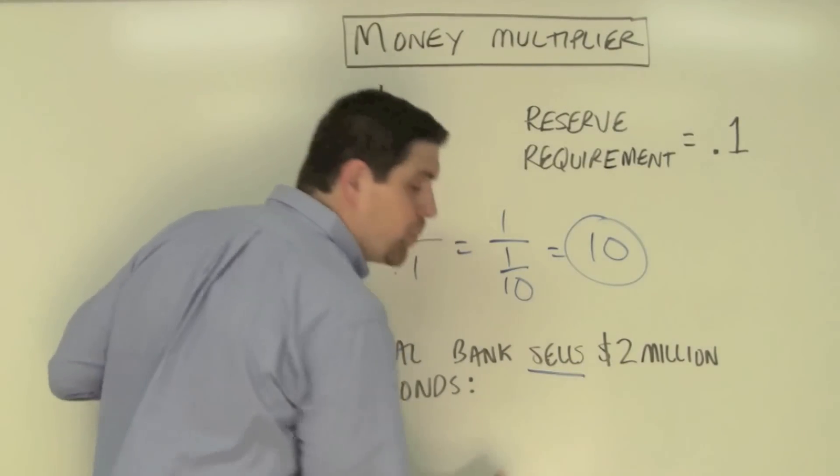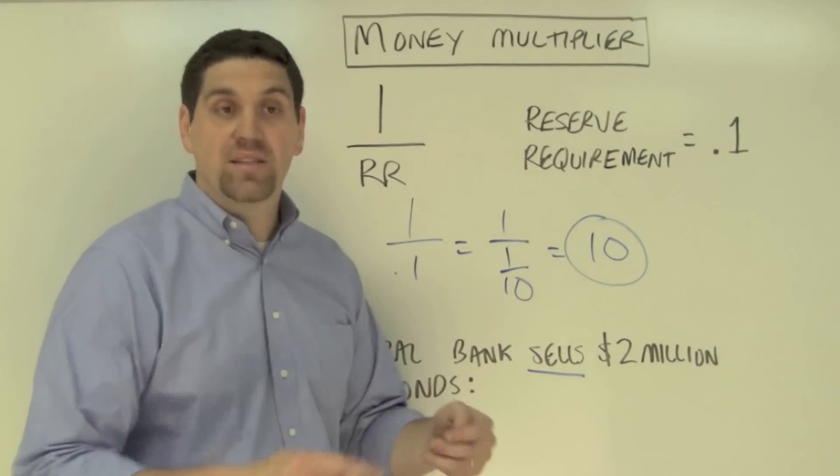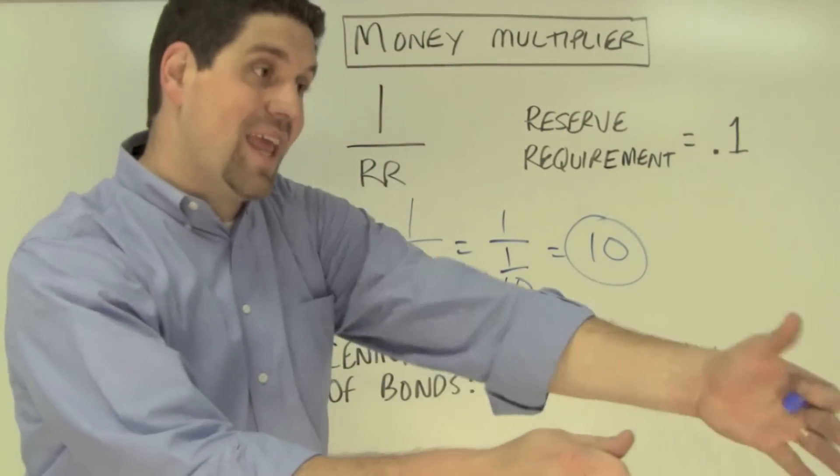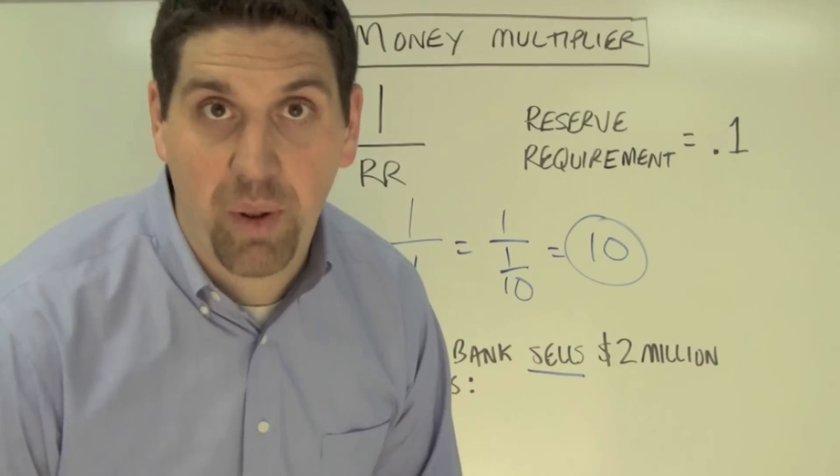Now, the word sells is super important. This central bank is doing something called open market operations. When the central bank sells bonds, it's giving bonds to the commercial banks and taking money out of the system. That money goes into the treasury and is no longer part of the money supply.